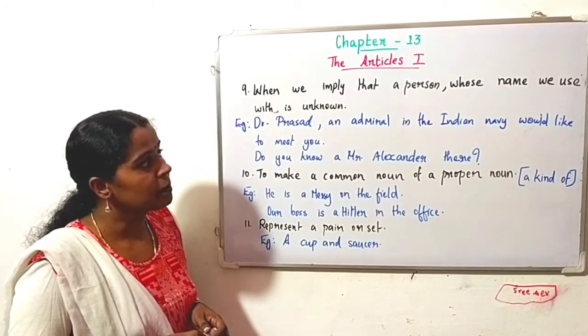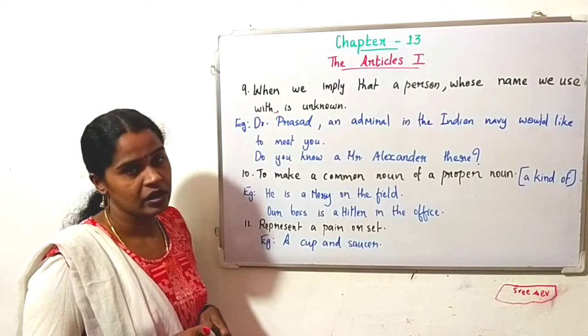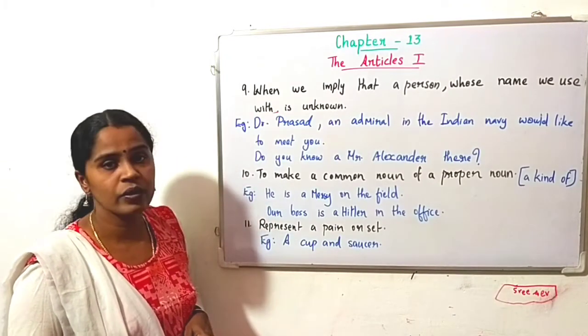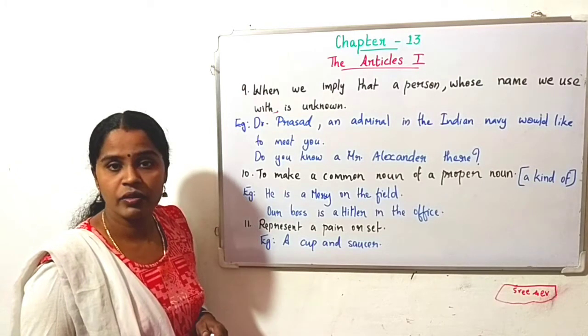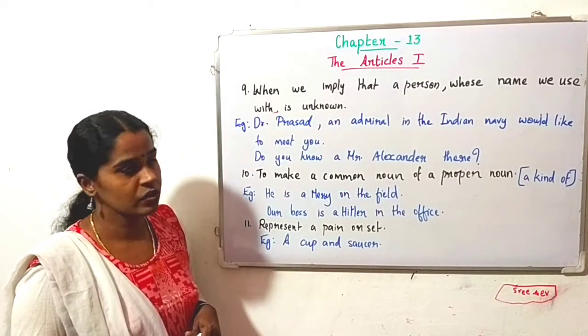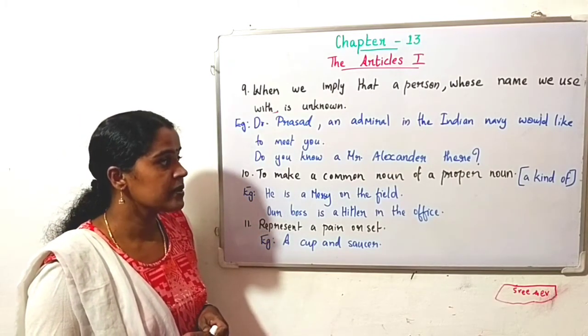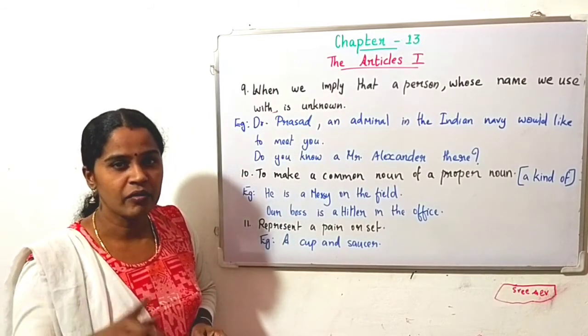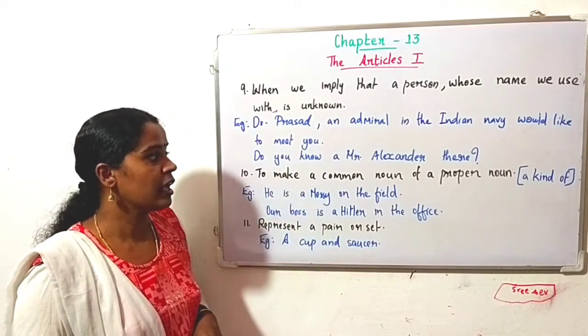Ninth one: When we imply that a person whose name we use with is unknown. We don't know who he is, we can use 'a' or 'an'. See: Dr. Prasad, an admiral in Indian navy, would like to meet you. Here actually we don't know who is Dr. Prasad, but we know he is admiral in Indian navy, so there we have used 'an'. Then see the next one: Do you know a Mr. Alexander there? We don't know which Alexander, one Mr. Alexander.